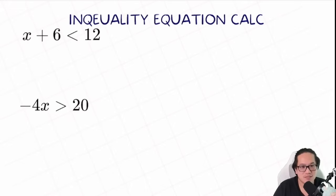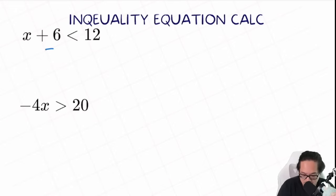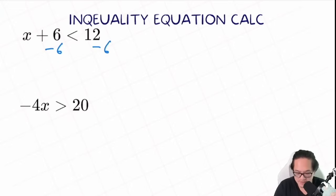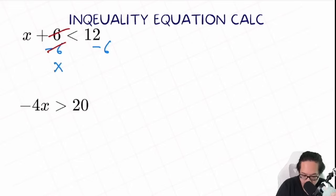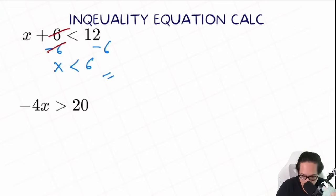We have x plus 6 smaller than 12. When you want to balance the equation, you do the exact opposite on both sides to isolate x. So in this case, we minus 6 on both sides. So the 6 here on the left will cancel each other out. What we have left is x smaller than 12 minus 6, which is equal to 6. And that will be your final answer.